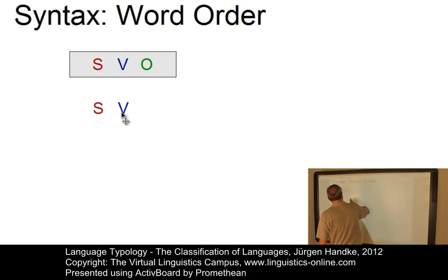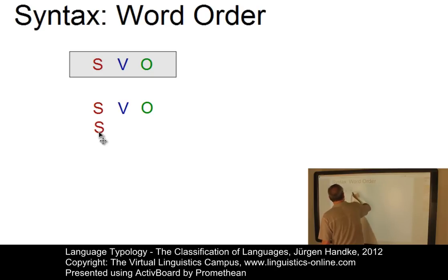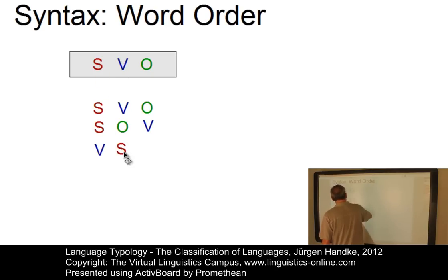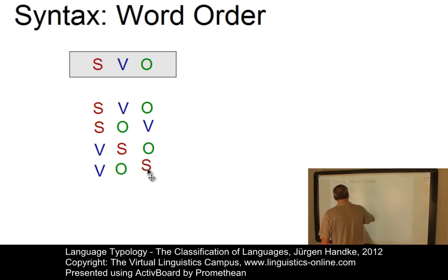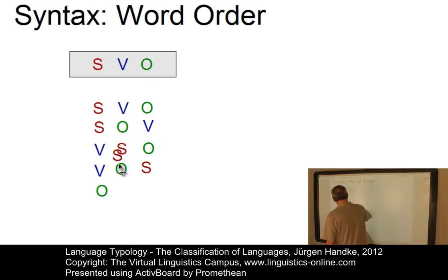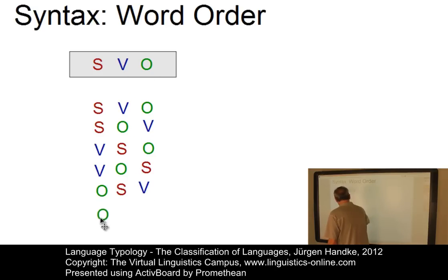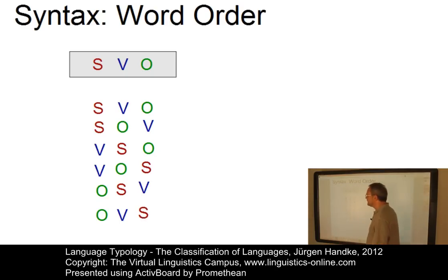For example, languages could exhibit the SVO structure, or could be organized in terms of SOV. Another possibility is to have the verb in first position, then the subject, then the object (VSO). Or, to have the verb first, then the object, then the subject (VOS). It is also imaginable that languages start with the object, then the subject, then the verb (OSV), or have the object followed by the verb and then the subject (OVS).